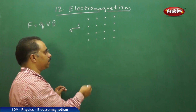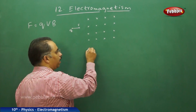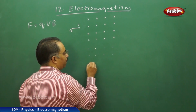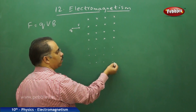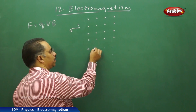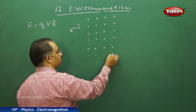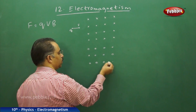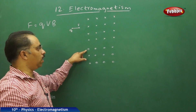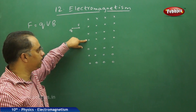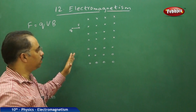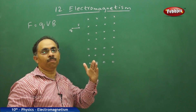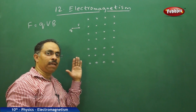Now imagine the situation is reversed — instead of going into the board, the magnetic field is coming out of the board. We denote this by a dot with a small circle around it. Each dot with a circle represents a magnetic field line coming out of the board. So all these dots with surrounding small circles indicate that the magnetic field is perpendicular to the plane of the board but coming out of the board — opposite to the direction we discussed before.